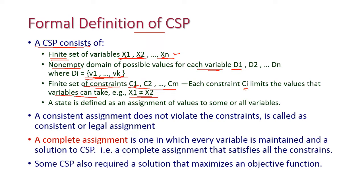A state is defined as an assignment of values to some or all variables. A consistent assignment does not violate the constraints, which is called a consistent or legal assignment. When assigning a value to a variable, we must follow all the constraints — all constraints should be satisfied — and then it is called a legal assignment.